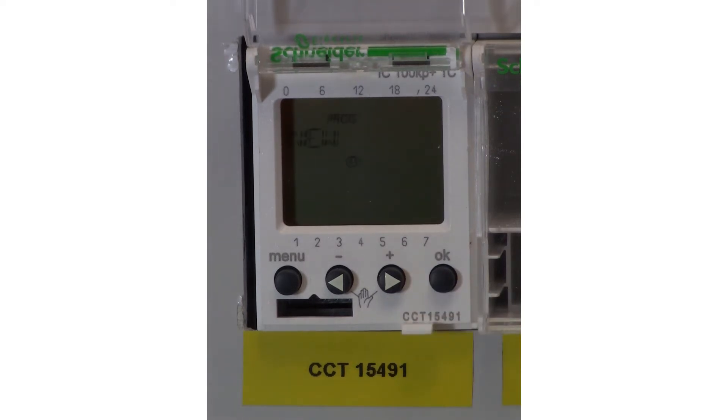Now we've set our two programs for the on and off time. We can go through and check these are correct. To do this, press menu, program, check. This will scroll through the time and the days that you've selected in your programs. Once you've gone through and this is all correct, press menu and you can go back to the summary screen.